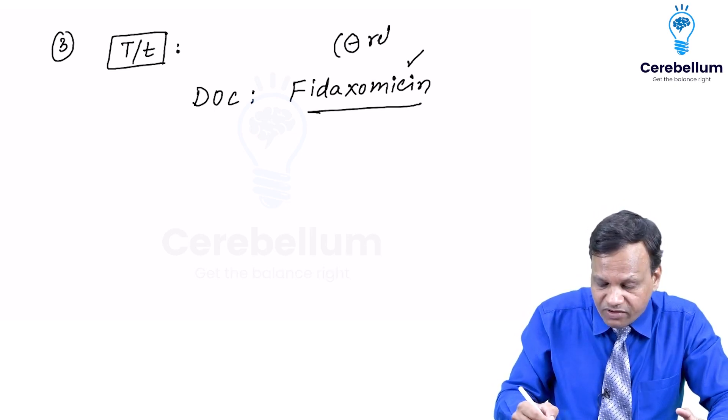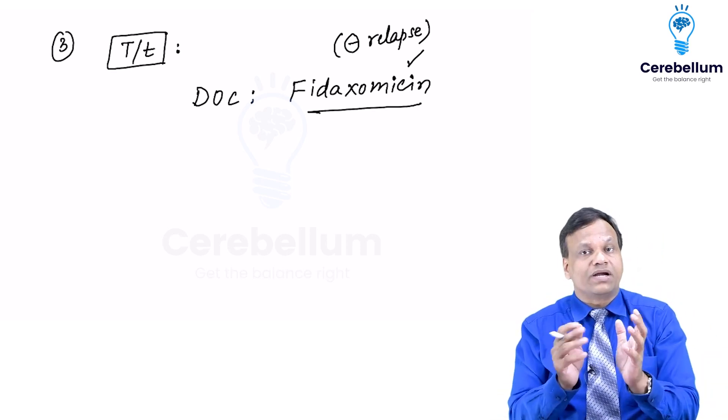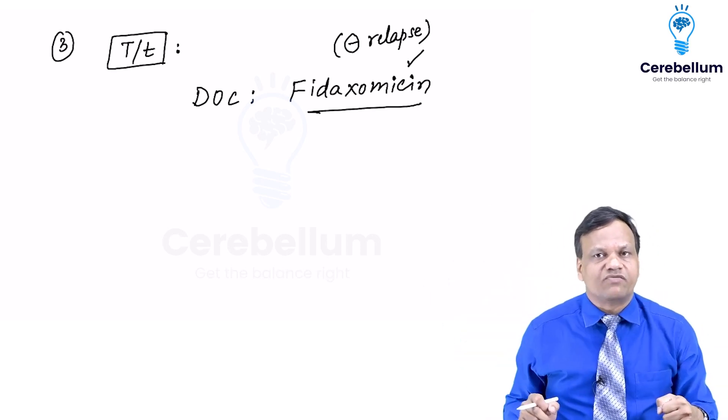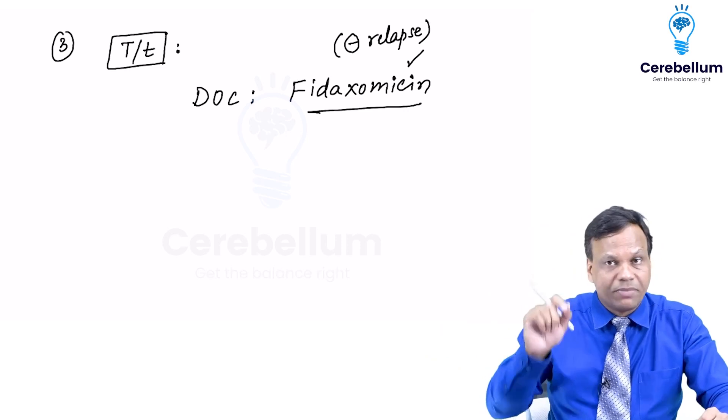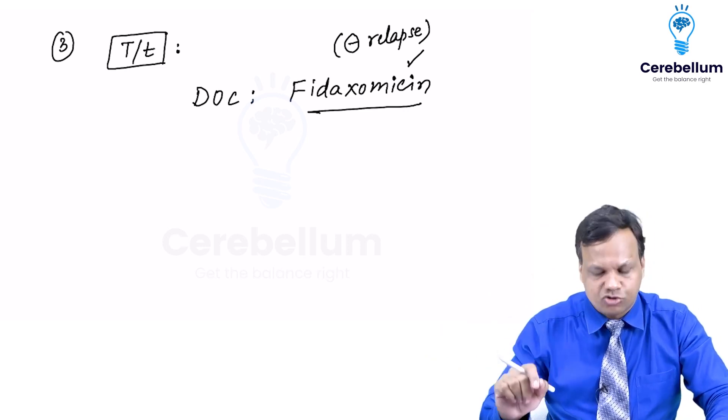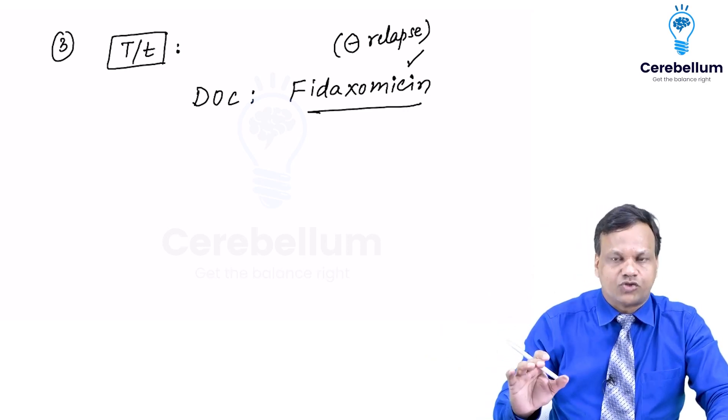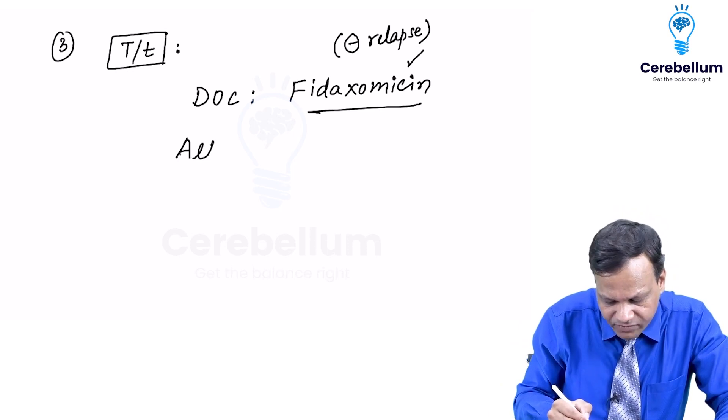Remember when we were treating with other drugs we were able to treat but again the person will develop the super infection after few days. So minimum risk of relapse is with fidaxomicin. So it is the drug of choice. What are the alternatives to this?